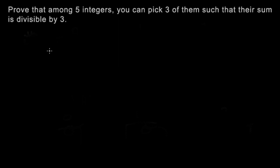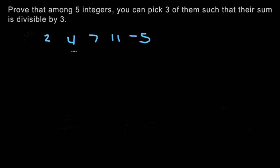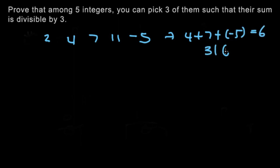I'm going to pick completely random five integers. So let's just say we have 2, 4, 7, 11, and negative five. Then we're trying to pick three of them such that their sum is divisible by three. There can be different answers, but one I found was 4 plus 7 plus negative 5, which equals 6. And obviously, 3 divides 6. So this question right here seems to work.